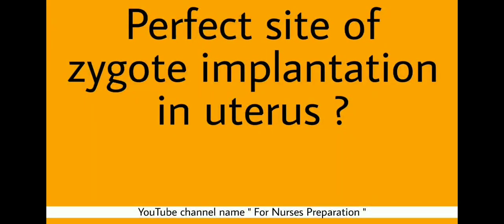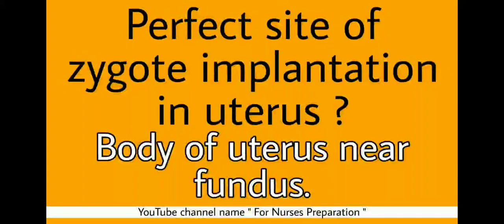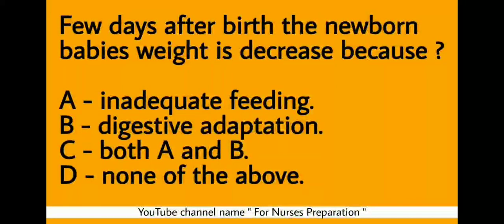What is the perfect site of zygote implantation in the uterus? The perfect site of zygote implantation in the uterus is the body of the uterus near the fundus.